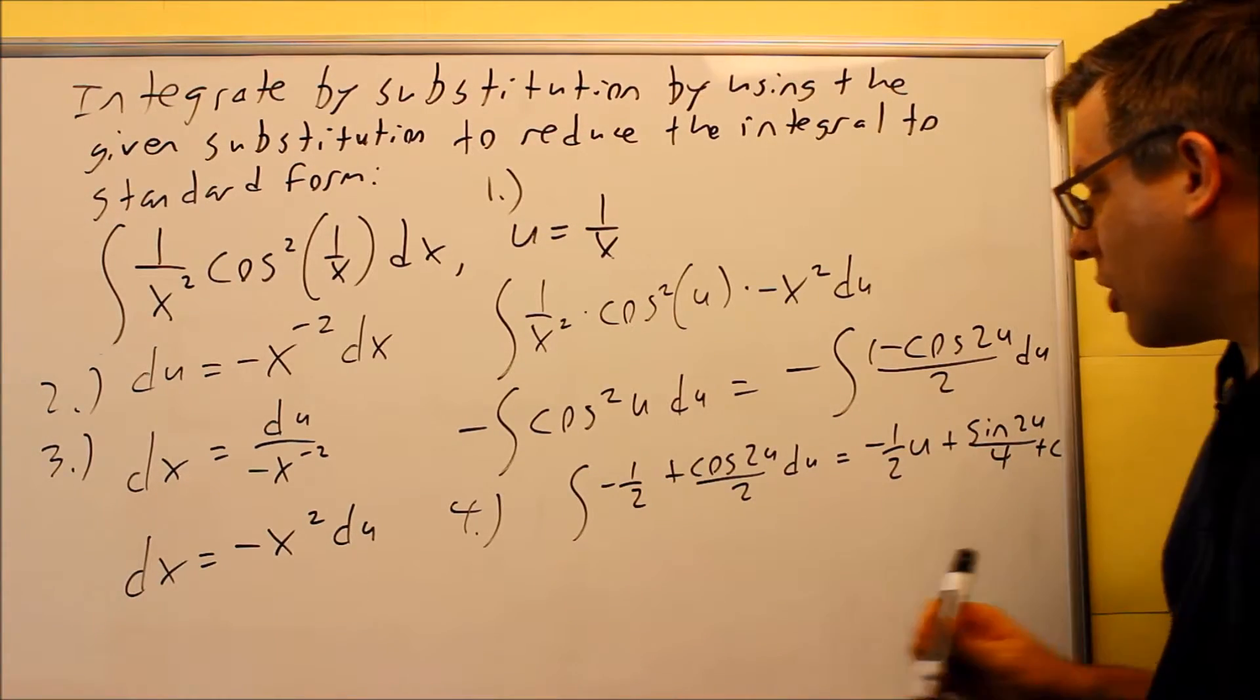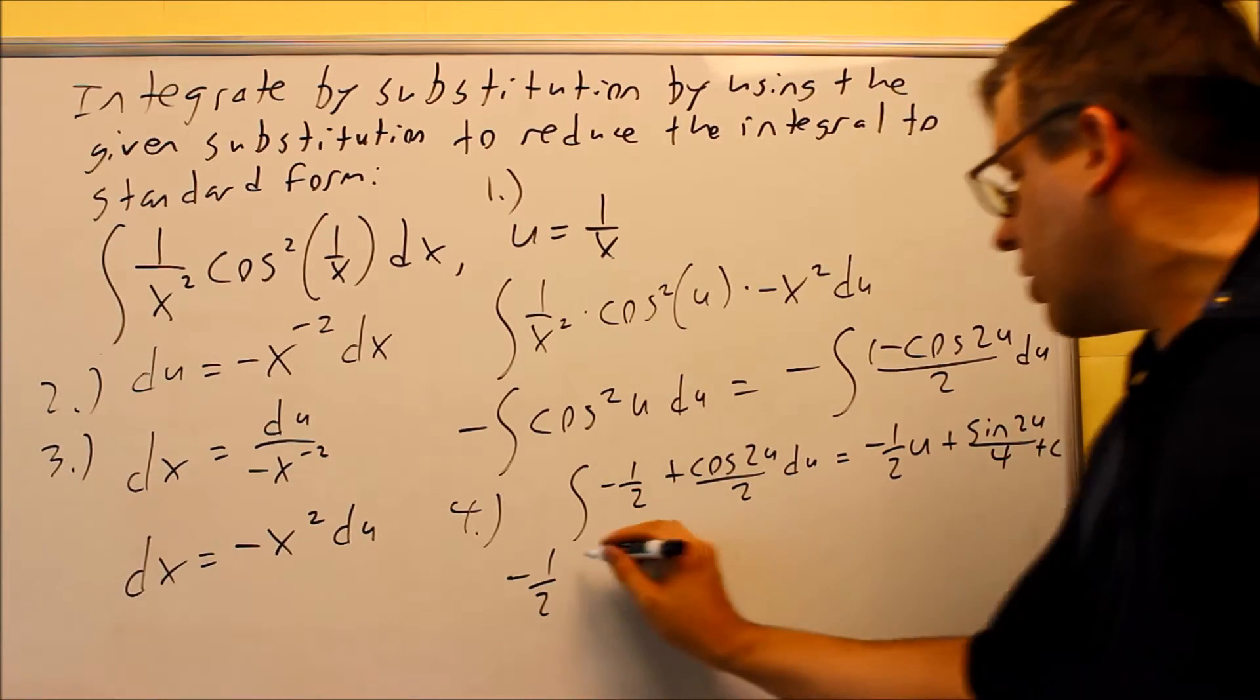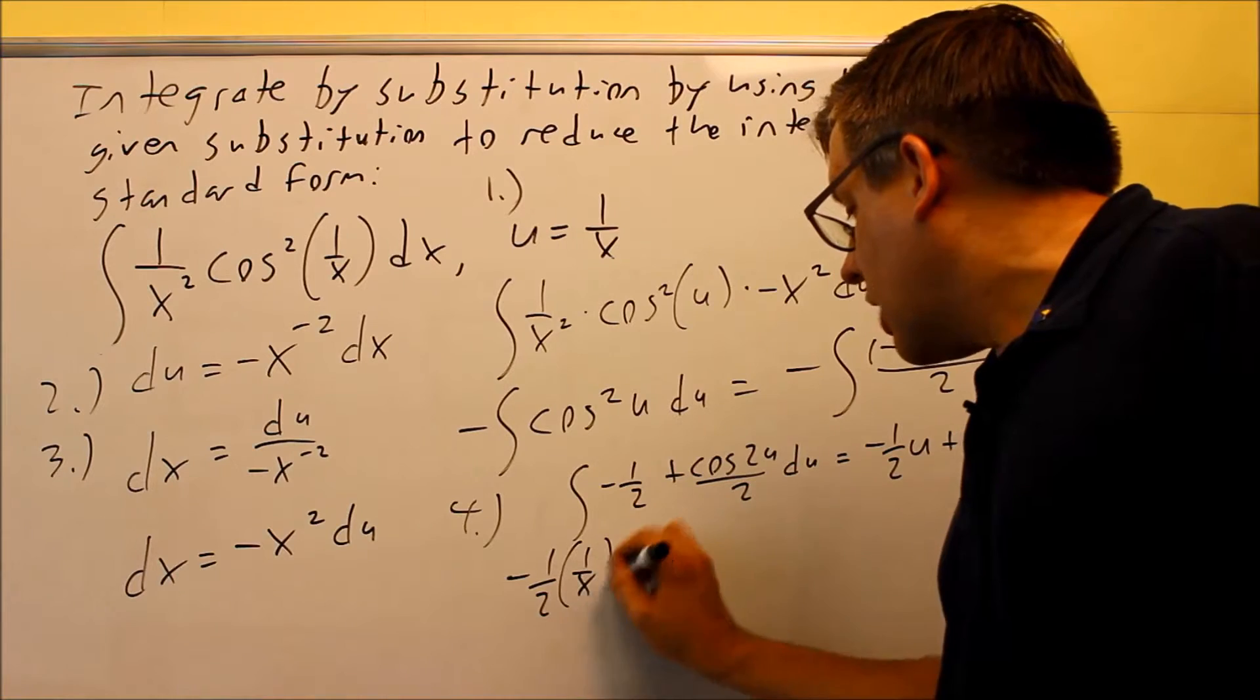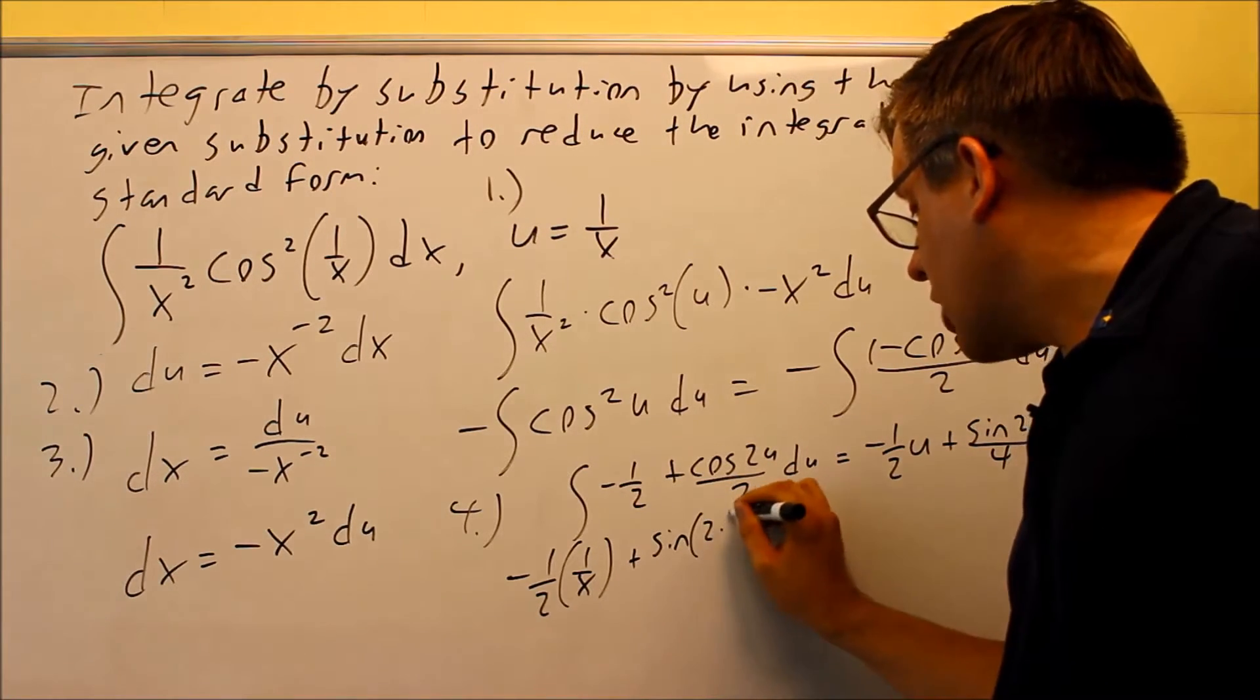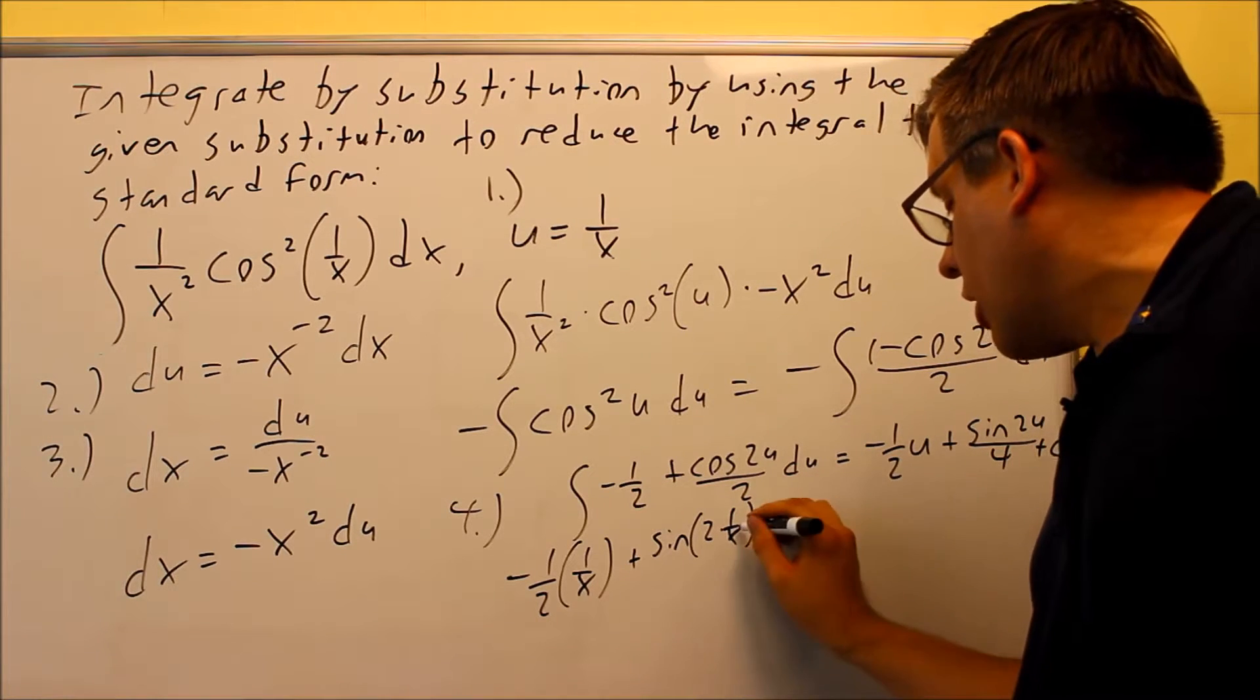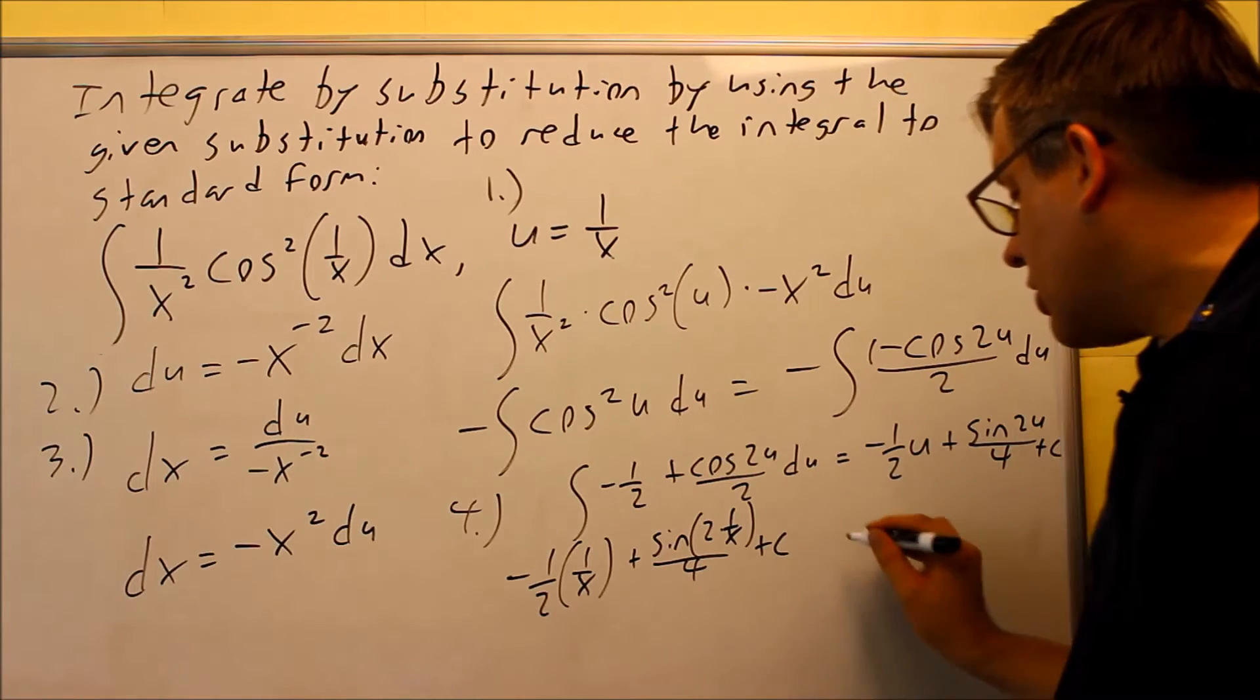So this is going to be your step four, but then you're not done yet because you also want to put in the u again. So I have a 1 over x on this. I have plus sine of 2 times the u, 2 times 1 over x, and then that's going to be over 4 plus c.